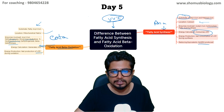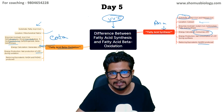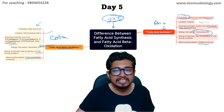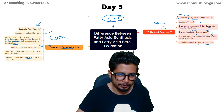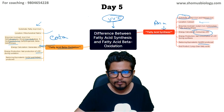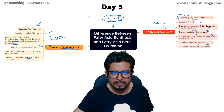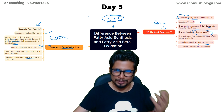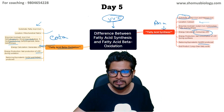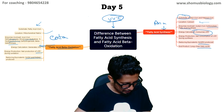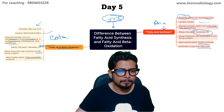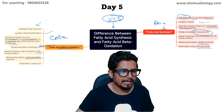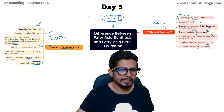The reducing equivalents produced in fatty acid synthesis are NADPH, while in fatty acid beta oxidation, NADH and FADH2 are produced. The end product of fatty acid synthesis is long-chain fatty acids, while the end product of beta oxidation is acetyl-CoA.